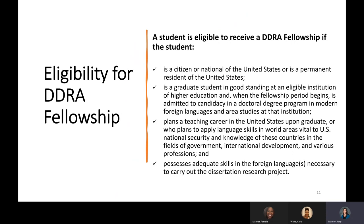A student is eligible to receive a DDRA fellowship if the student is a U.S. citizen or national, or a permanent resident. Students who are J-1 visa holders are not eligible. The student must be in good standing at an eligible institution of higher education when the fellowship period begins, admitted to candidacy in a doctoral program in modern foreign languages and area studies. A student is eligible if they are planning a teaching career in the United States or plan to use language skills in world areas vital to U.S. national security. Eligible applicants should possess adequate skills in foreign languages necessary to carry out their dissertation research project.